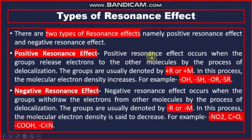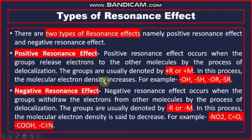Positive resonance effect occurs when the group releases electrons to the other molecule by the process of delocalization. The groups are usually denoted by plus R or plus M. In this process, the molecule's electron density increases. For example, OH, SH, OR, and SR.